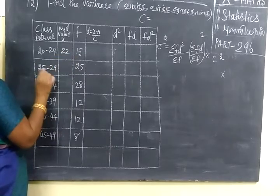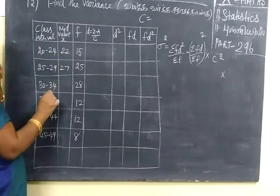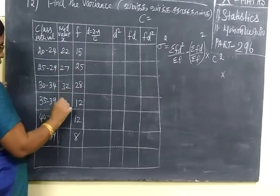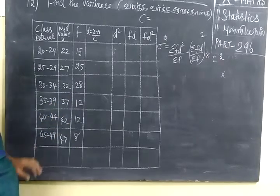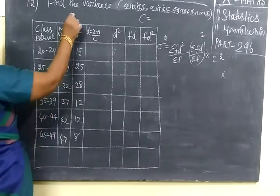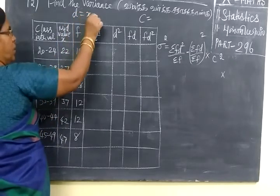If the class interval is given, to find the mid value you get 22, 27, 32, 37, 42, 47.